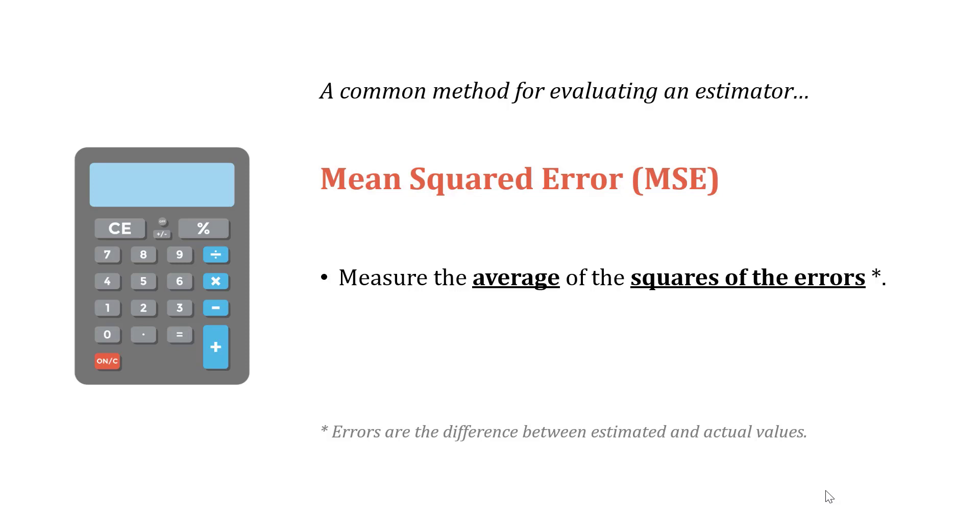Remember, errors are the difference between estimated and actual values. How far off were we? It considers both bias and variance of estimators.